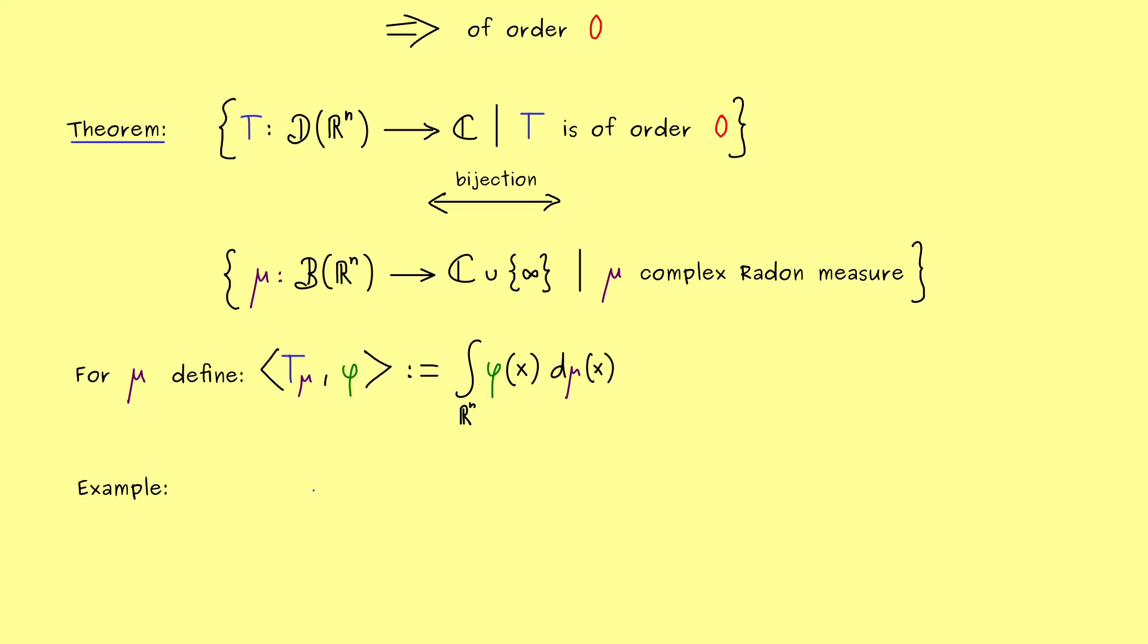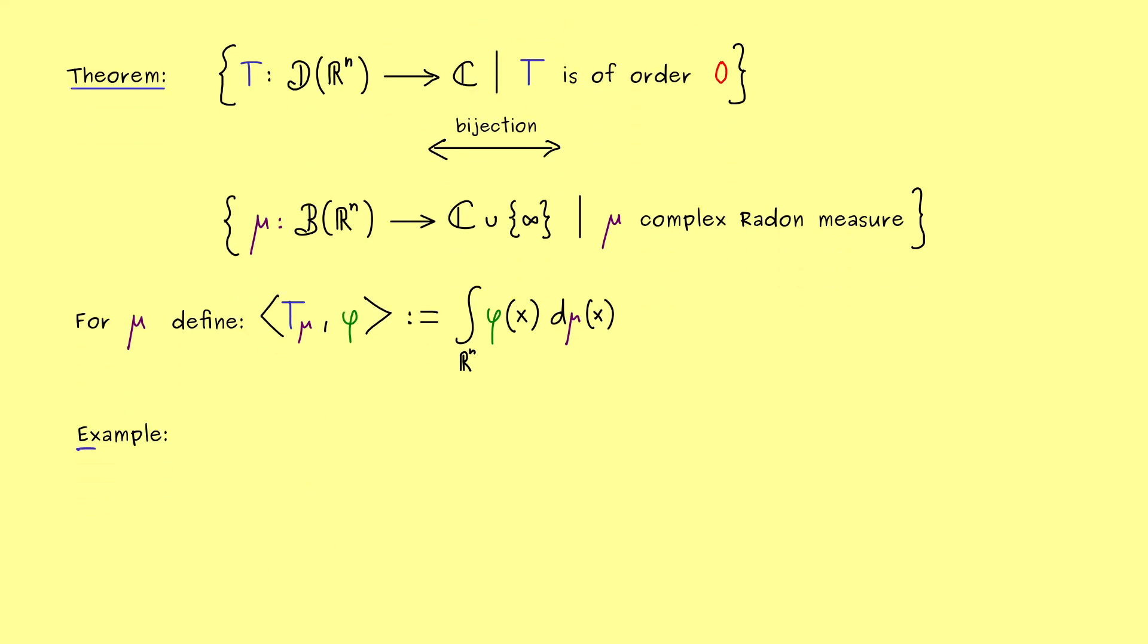And now for the end of this video, let's look at a nice example. Now, if you know some measure theory, you might know the Dirac measure defined in the origin. So δ of a set A is either 0 or 1. And it just depends, if the origin 0 lies in the set A or not.